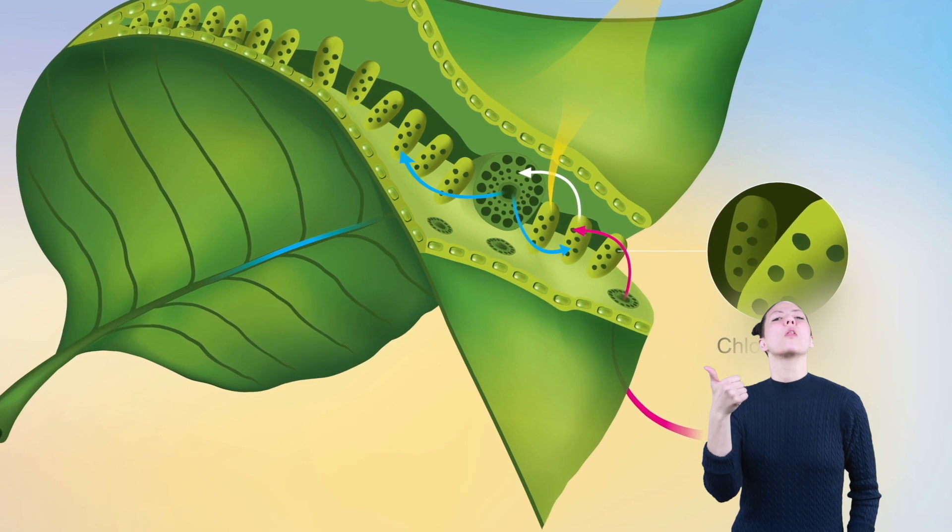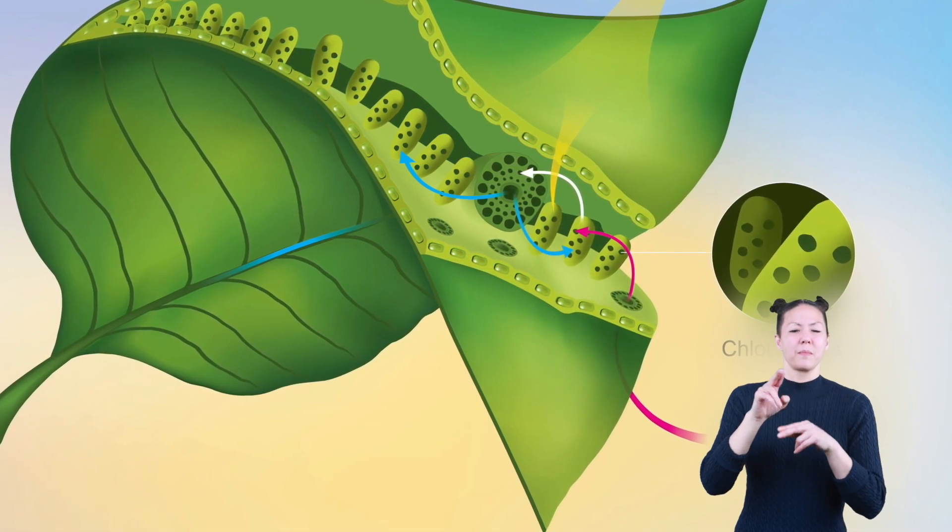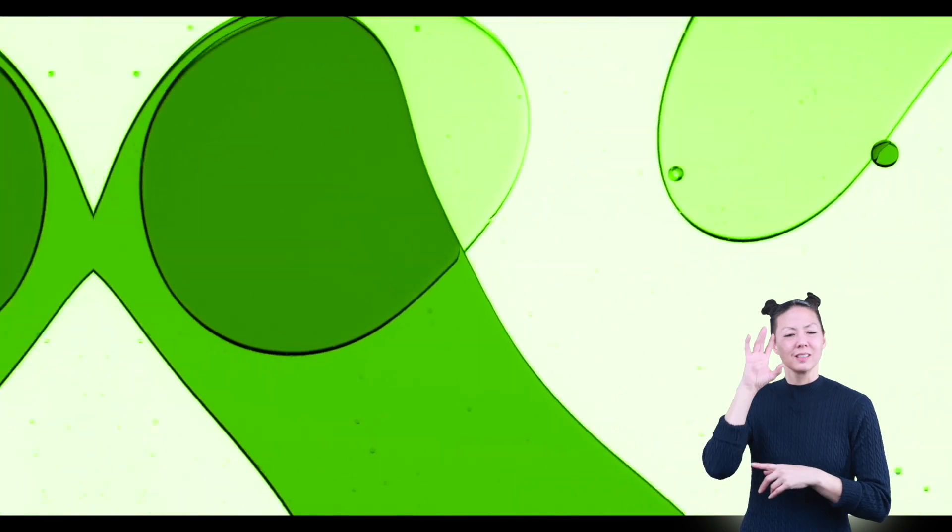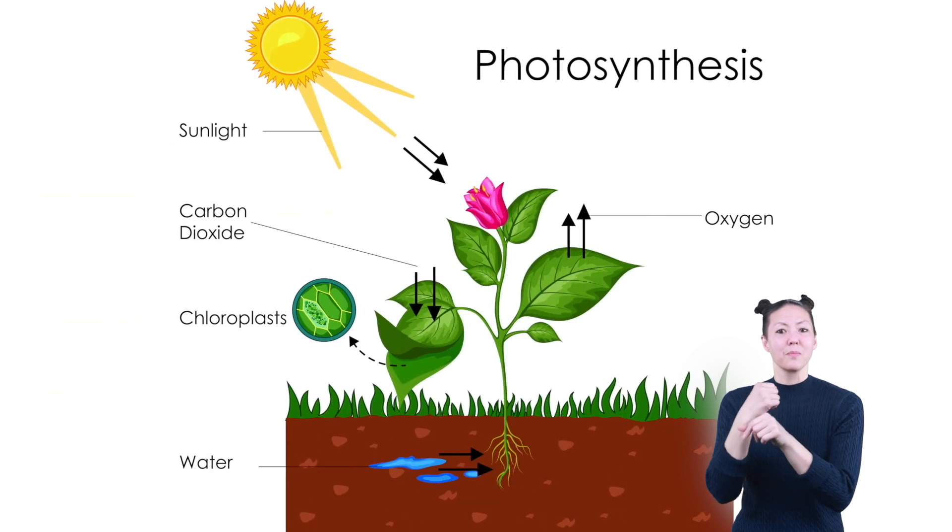Chloroplasts are the other extra part of a plant cell. They create sugar through photosynthesis, which uses energy molecules from the sun to produce food for the plant.